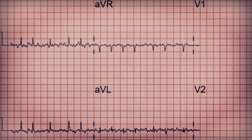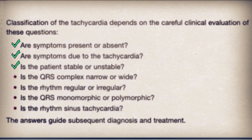The QRS complexes are not regularly or evenly spaced, indicating atrial fibrillation. Going back to our algorithm questions: is the QRS narrow or wide? It is narrow — less than 0.12 seconds. Is the rhythm regular or irregular? It is irregular. Is the QRS monomorphic or polymorphic? It looks polymorphic due to the high electrical activity from atrial fibrillation. Is the rhythm sinus tachycardia? No — this is a-fib.